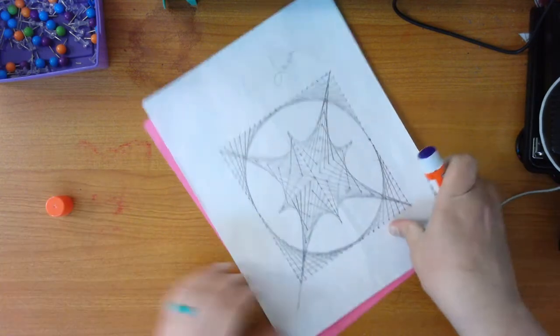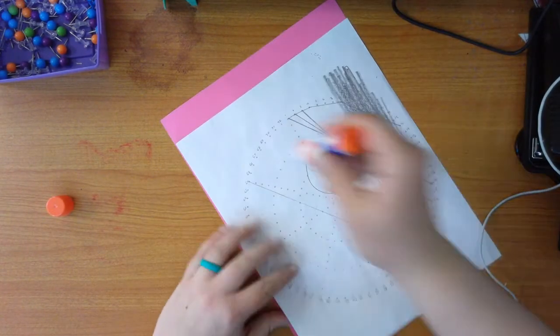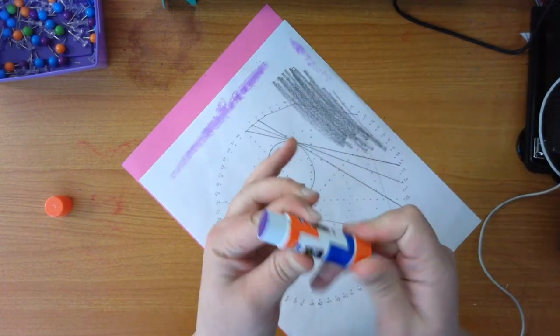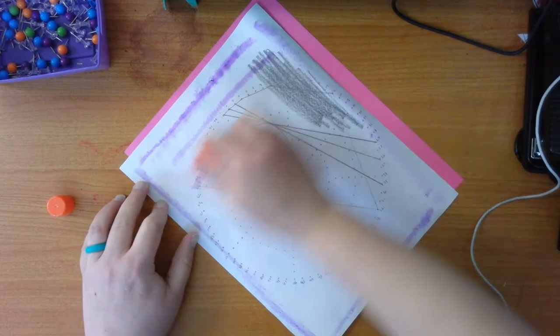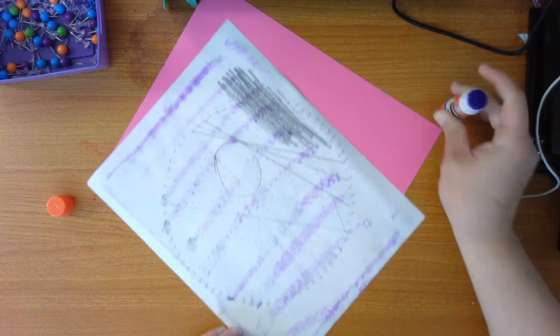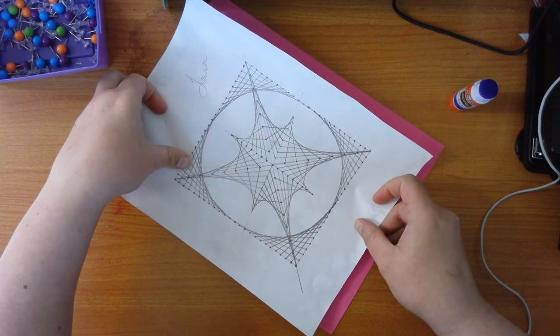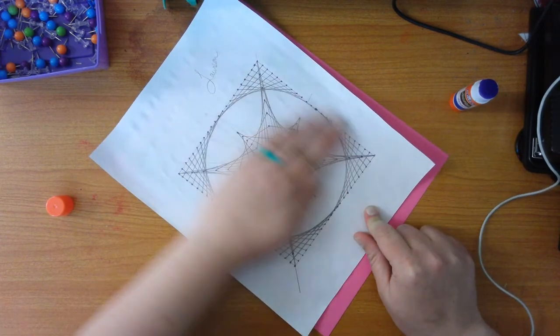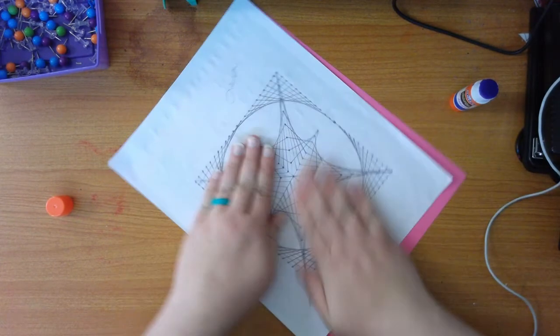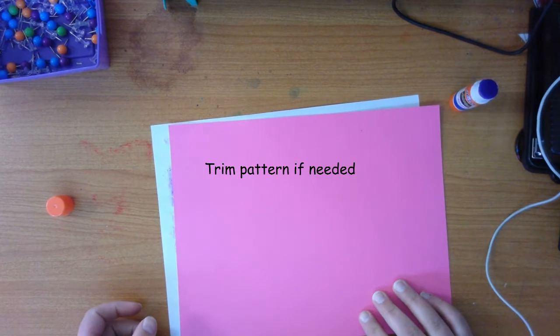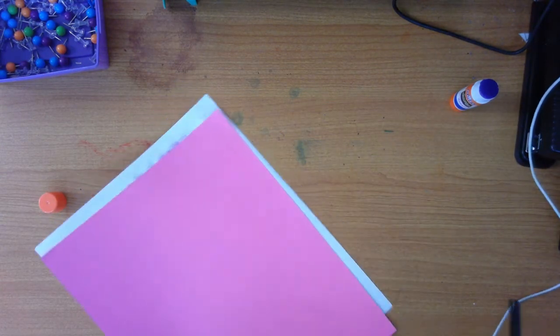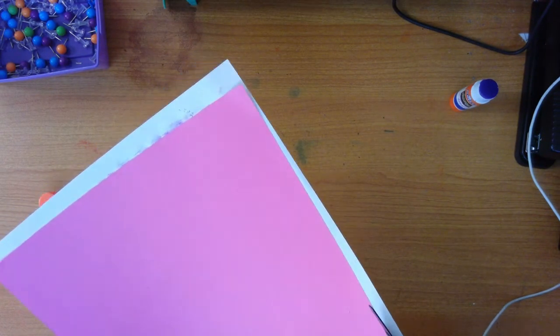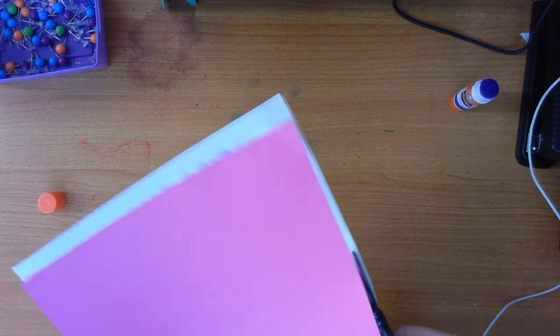We're going to glue our design to our cardstock. Try and center your design. Press it down really well. If your design is larger than your paper or if it's not quite centered, that's okay. With nothing more than a pair of scissors, we can fix that quite easily. I would wait to cut it down to size after you've glued it down because once it's glued down, we can cut it to the perfect size.